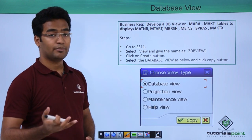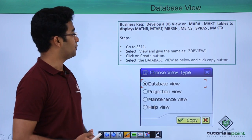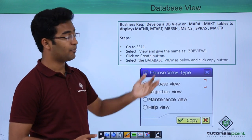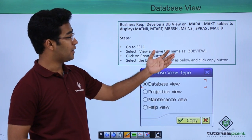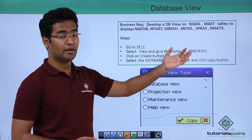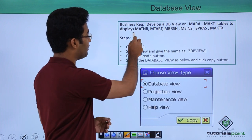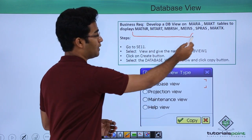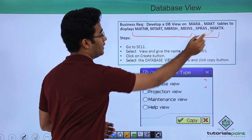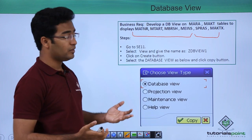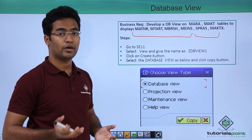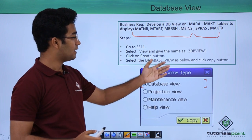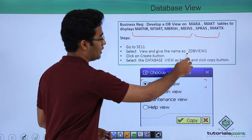Now let us look at the database view in detail. Suppose there is a business requirement to develop a database view on the MARA table and MAKT table. From the MARA table we have these fields, and from the MAKT table we have SPRAS and MAKTX.